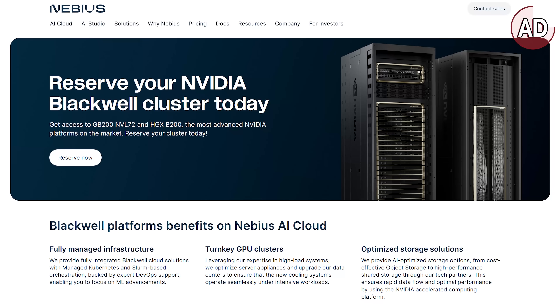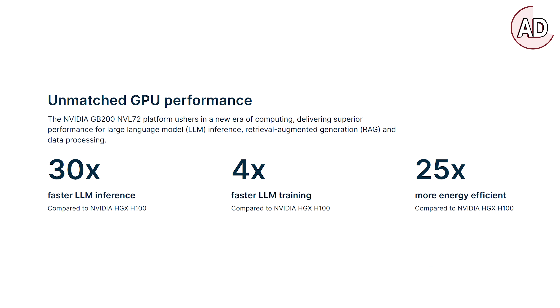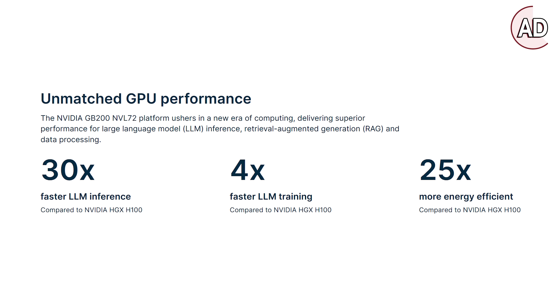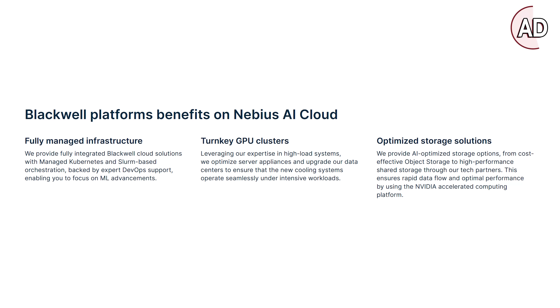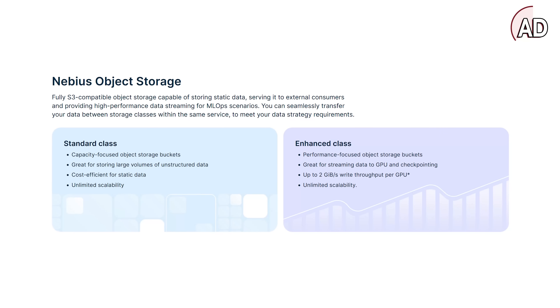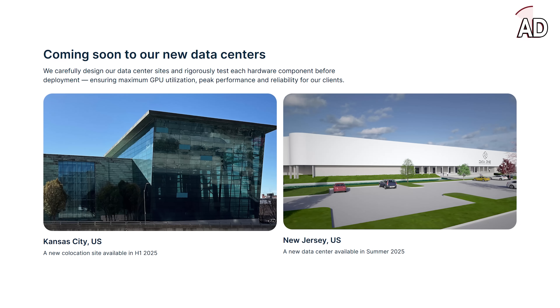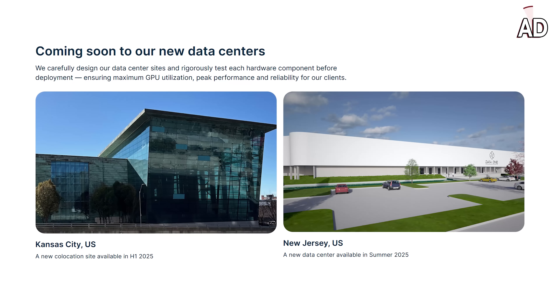AI models are exploding in scale, and if you're building anything from millions to trillions of parameters, you already know you need serious infrastructure. That's where Nebius comes in. The new NVIDIA Blackwell GPU clusters are already available in Nebius AI cloud — 30x faster inference and 4x faster training than the previous generation H100s. You get fully managed clusters, Kubernetes or Slurm orchestration, and DevOps support built in. These are fully turnkey data centers with new cooling systems and GPU utilization tuned to the limit. You can get cost-efficient object storage or ultra-high-performance shared storage. Blackwell on Nebius is purpose-built for reasoning models, long context inference, and training massive MoEs. They already launched a massive data center in Kansas City with a new one coming in New Jersey.